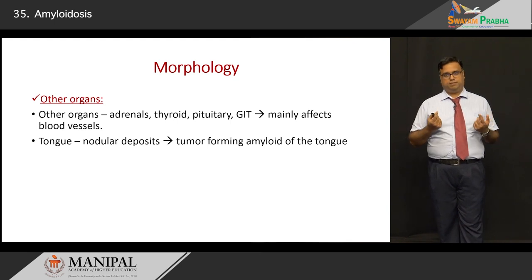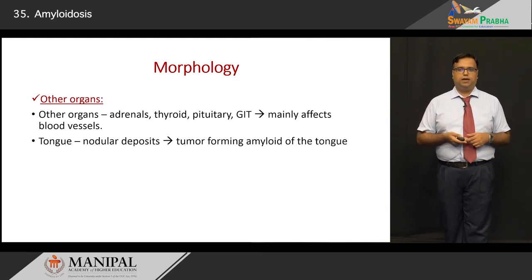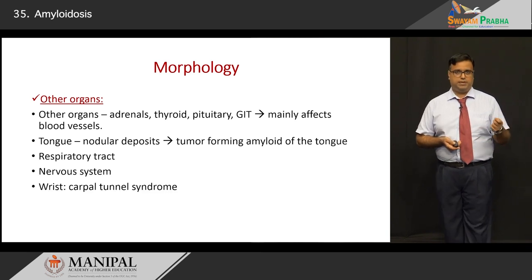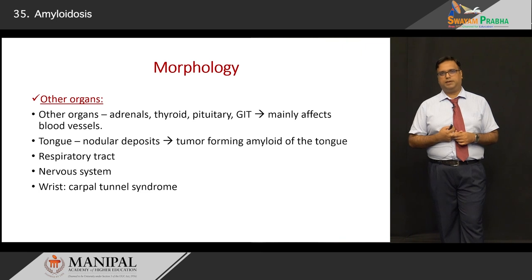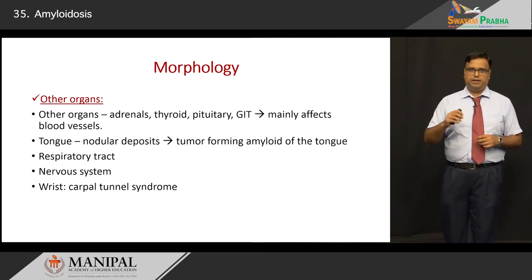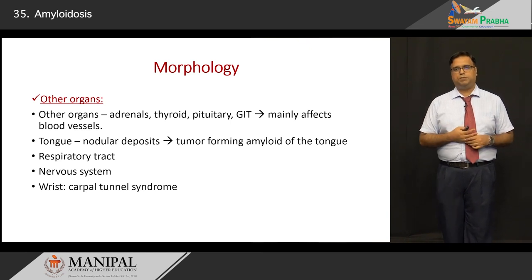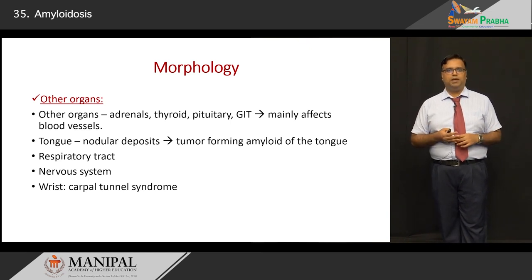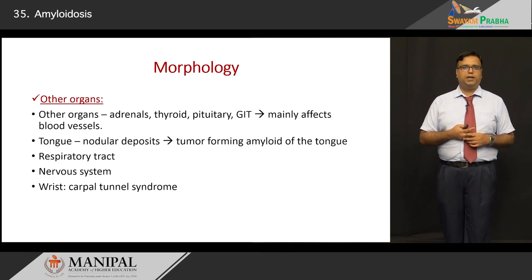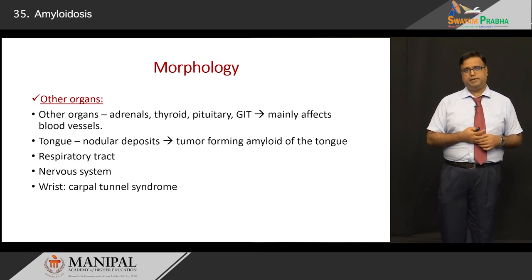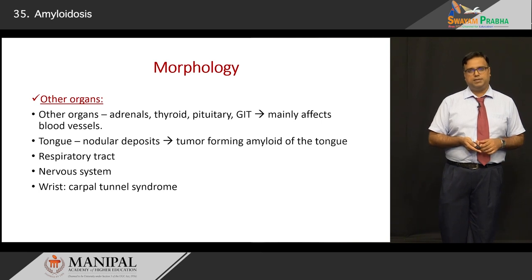Amyloid can deposit in the tongue, causing tumor-forming amyloid of the tongue. It can also involve the respiratory tract and CNS. A lesser-known fact: amyloid is one of the causes of carpal tunnel syndrome. Outside of hypothyroidism and ergonomic causes from prolonged computer use, deposits of amyloid along the flexor retinaculum can result in carpal tunnel syndrome.